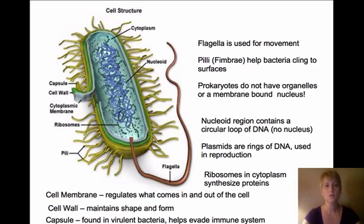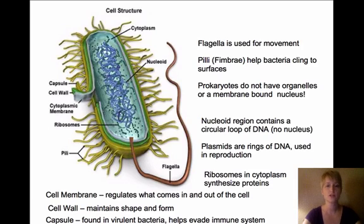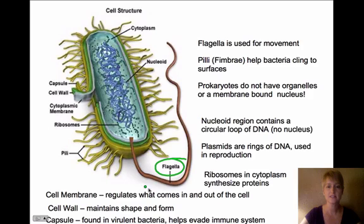We're going to talk quite a bit about the cell structure of bacteria so that you will be able to look at a cell and immediately know that it's a bacteria cell rather than a eukaryote cell. The flagella is used for movement — that's this long tail or whip-like structure right here — and the bacteria use that to move around.